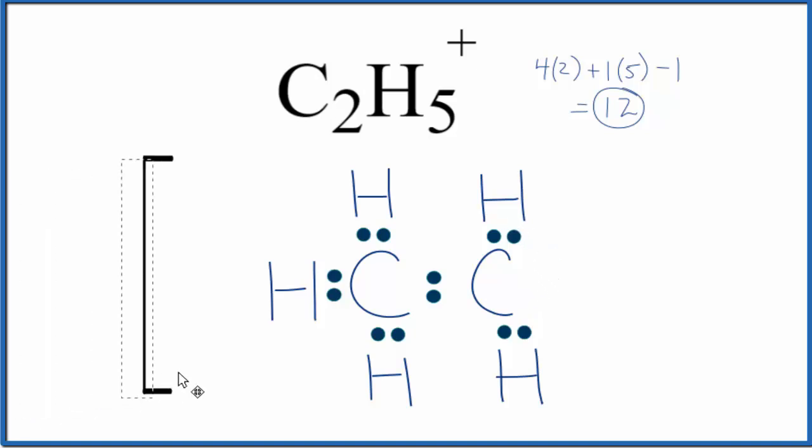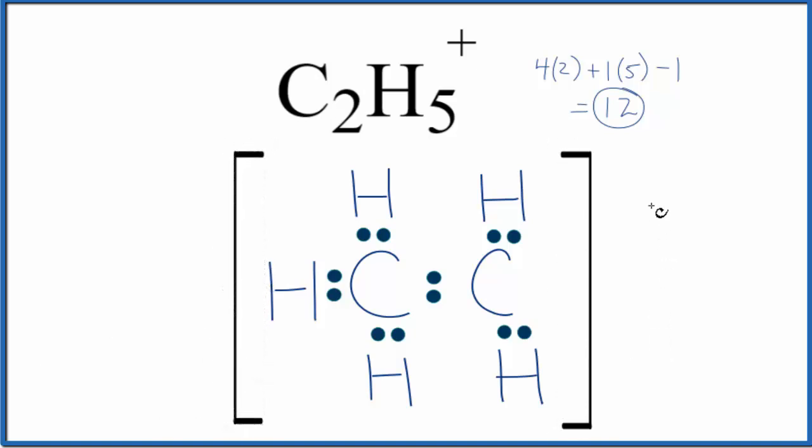Often with ions, you'll see brackets placed around it. Some teachers want you to do this and then put a positive sign outside. But what you'll see most often is an asterisk put right here outside to show that this is a radical.